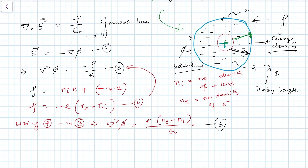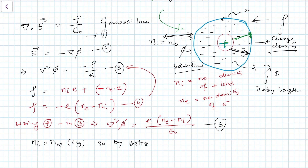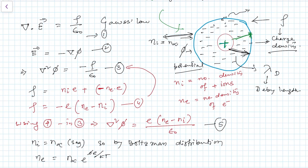Outside this sphere, n-i is constant — the number of positive ions is constant — so let us denote it as n-infinity. By the Boltzmann distribution, the electron distribution n-e will be given by n-infinity times e to the power (phi times e divided by kT).